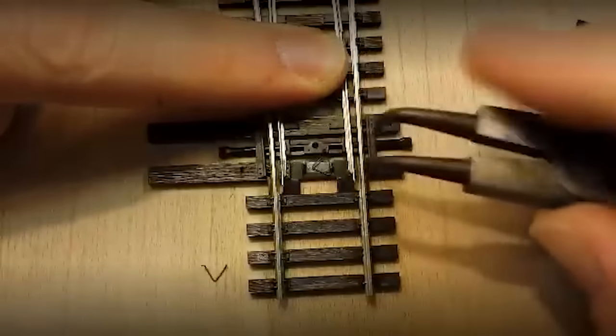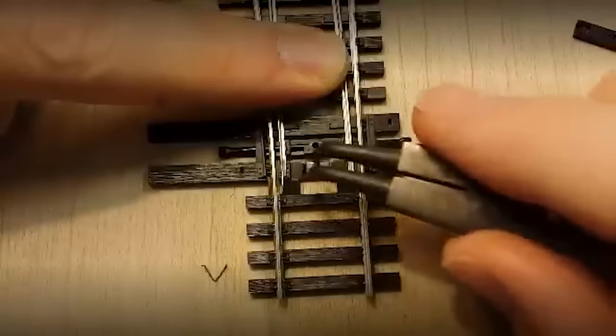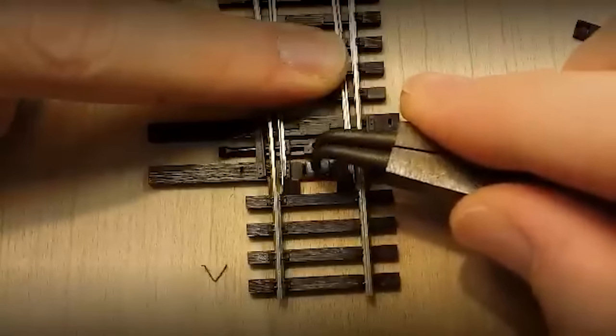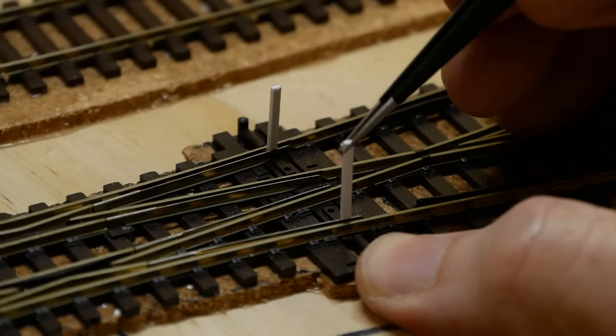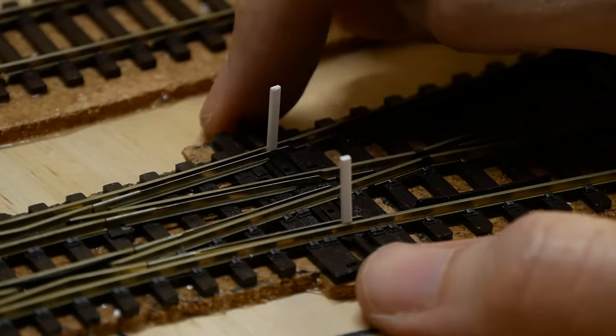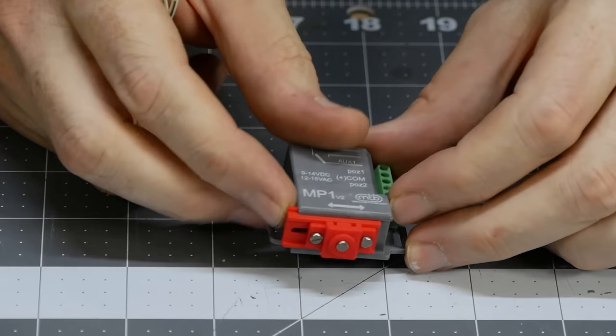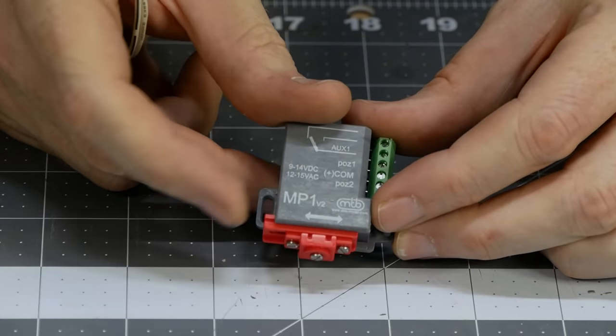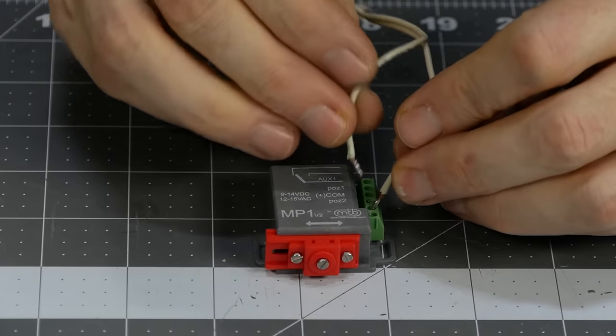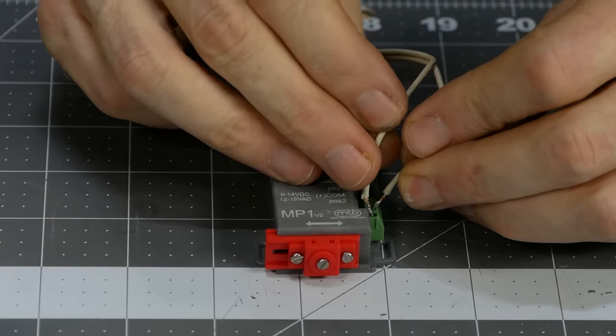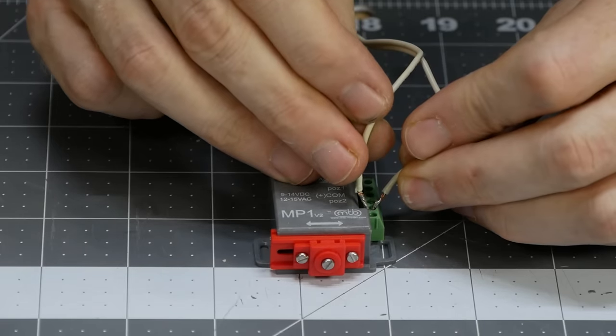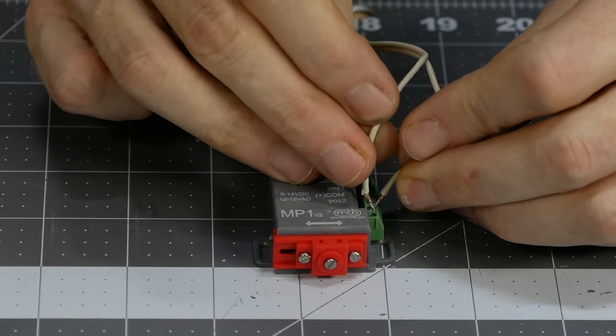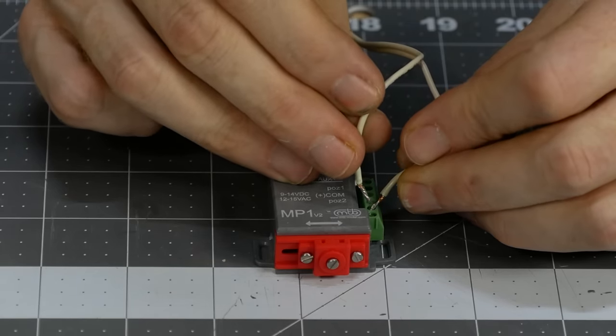I also left the over centering spring in the points as well. These could be removed if desired. Before mounting I first center the points using some styrene strips. I also center the point motor as well. The MP1 needs to be powered to make it move so using a 12 volt supply I add and remove power to the motor in order to get it to move. I just stop when it's centered.